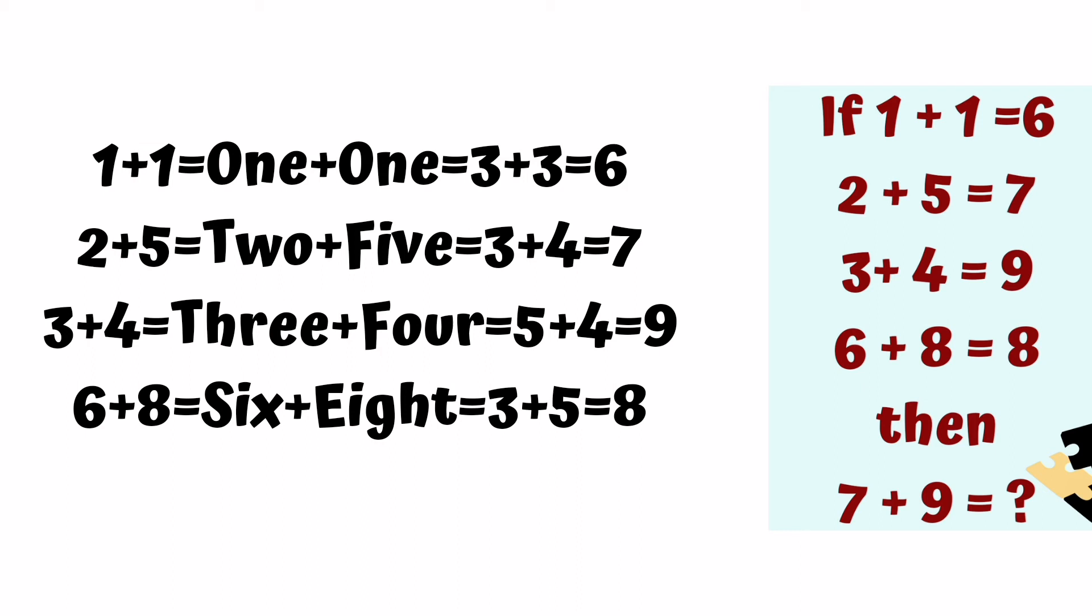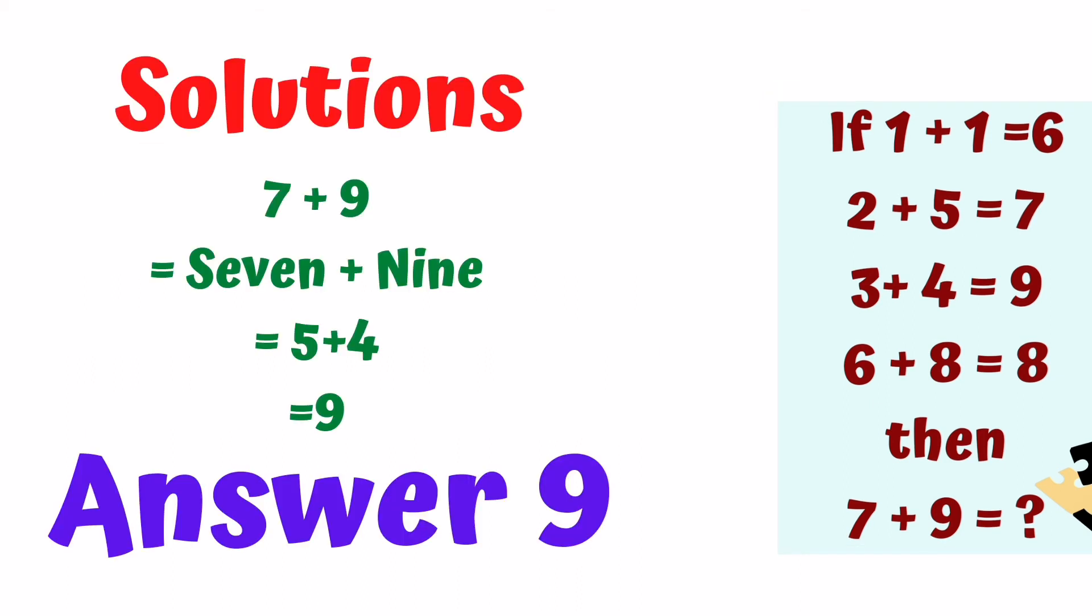The last row value is 8. What will be the final solution? 7 plus 9: SEVEN has 5 letters, NINE has 4 letters, 5 plus 4 equals 9.